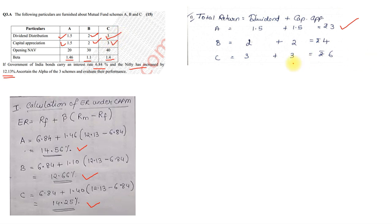Once you get total return, we need to find the actual return. So, actual return ka formula is total return upon opening NAV into 100. So, 3 upon 20 into 100, 4 upon 30 into 100, and 6 upon 40 into 100, so the actual returns are 15%, 13.33% and another 15%.